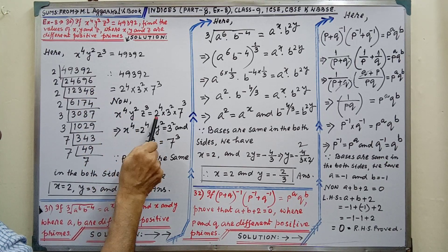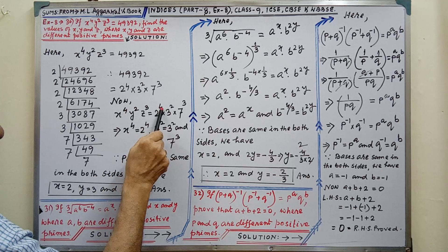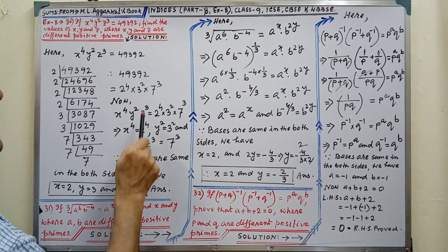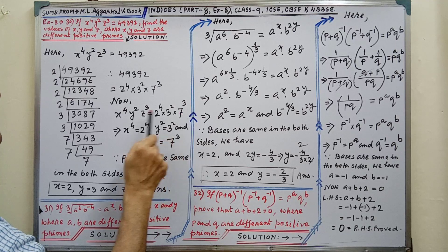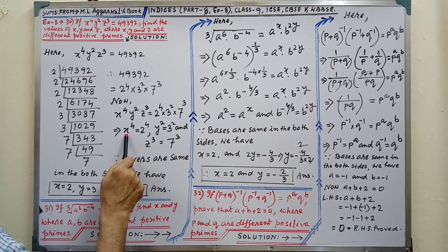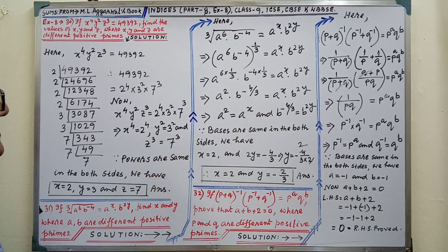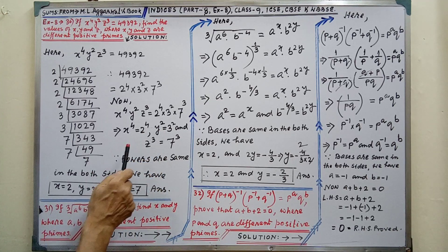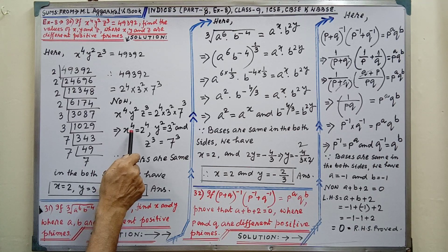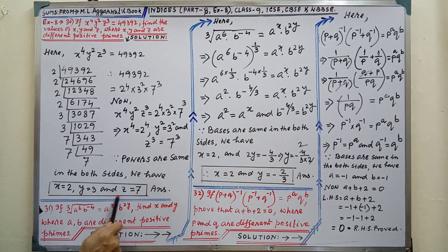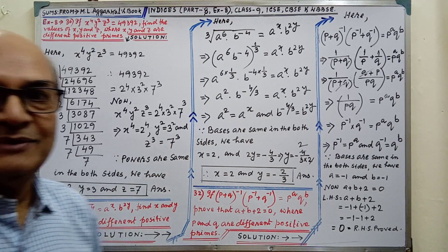Then x to the power 4 equals 2 to the power 4 — powers are equal. y square equals 3 square — powers are equal. And z cube equals 7 cube — powers are equal. Since powers are the same on both sides, we may write x equal to 2, y equal to 3 and z equal to 7. These are the values of x, y and z. Sum is completed.